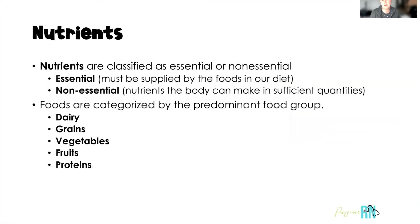Nutrients are also classified as essential or non-essential. Essential nutrients are those we have to eat in order to get them into our body — they're supplied by our diet. Non-essential nutrients, on the other hand, are those our body can make in sufficient quantities. Some amino acids our body can make, and when we think about vitamins, we specifically think about vitamin D — if we get enough sunlight, our body can manufacture it. Foods are also categorized into the five food groups: dairy, grains, vegetables, fruits, and proteins.